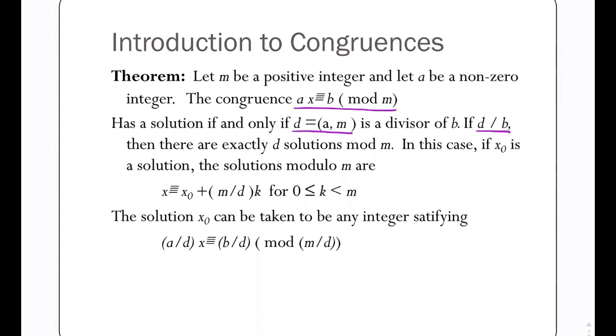In the examples I've shown you previously, the greatest common divisor was 1, which means there's exactly one solution and we know how to solve that problem. But what if the greatest common divisor is larger than 1? Let's take a look at some examples.